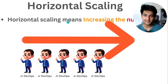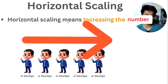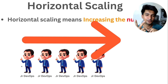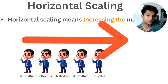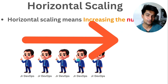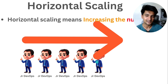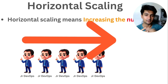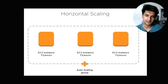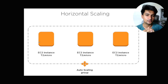The next scaling type is horizontal scaling, which means increasing the number of servers to handle the increased load. Using the same example — a junior DevOps engineer can do two projects a day. If you want four projects done, add another junior engineer. For six, add another. For eight, add another. Similarly, if you have more traffic coming in, you can add more servers. Instead of one T2 micro, you can have two or three T2 micros to handle the load.